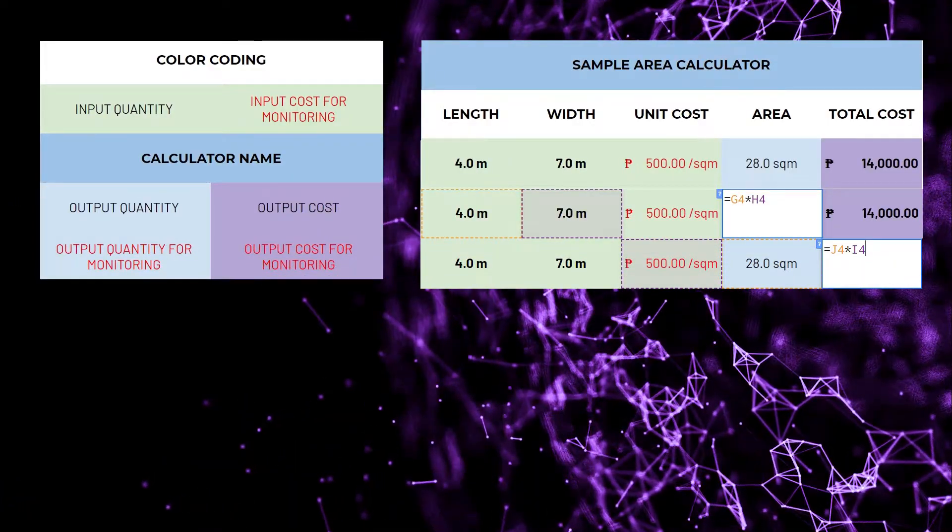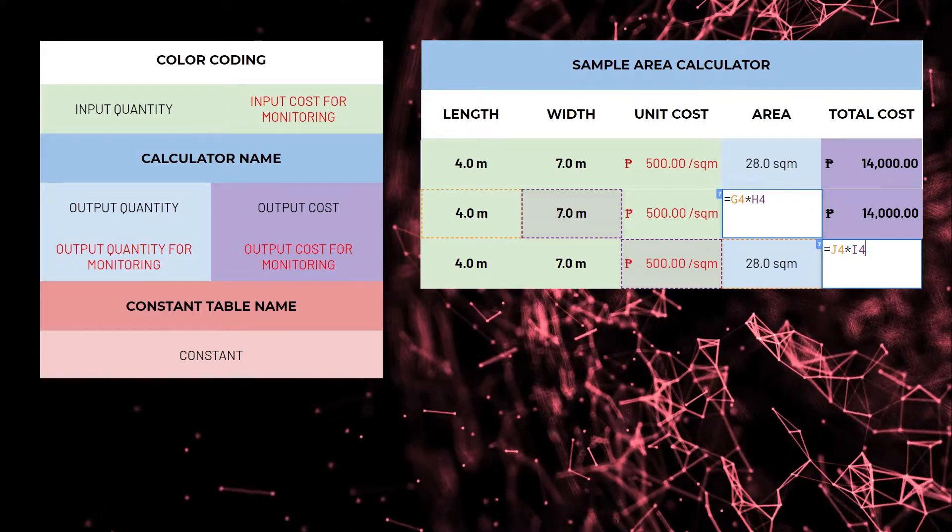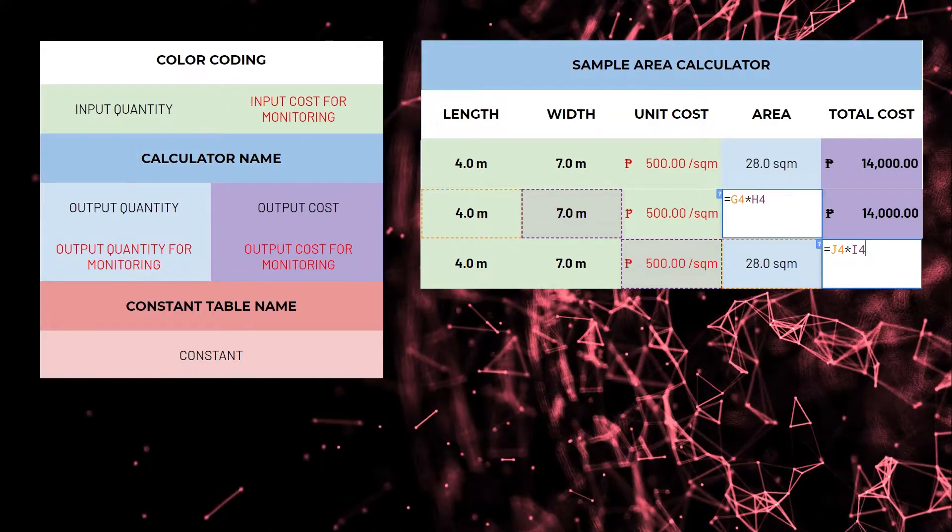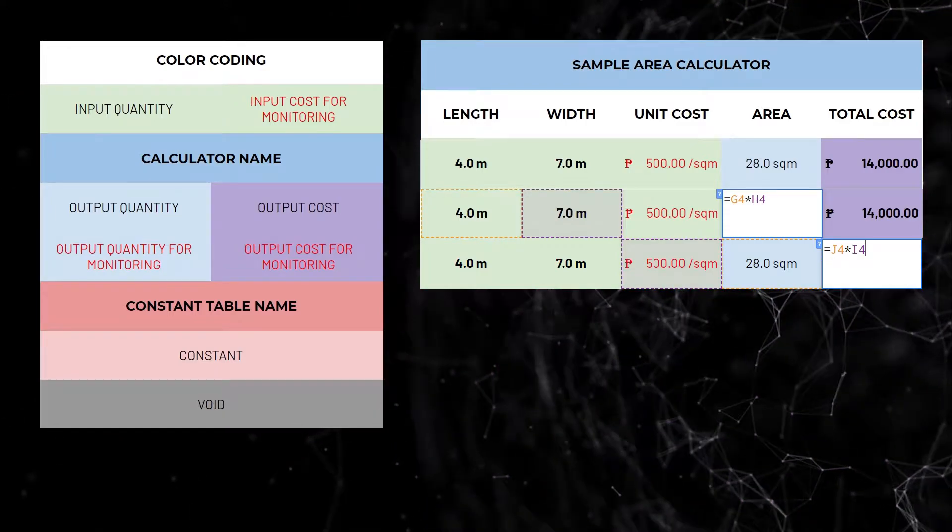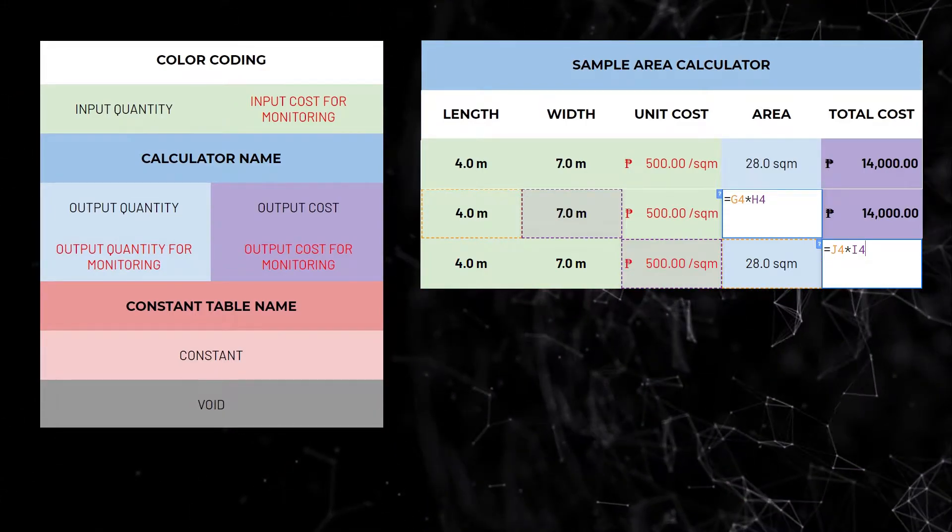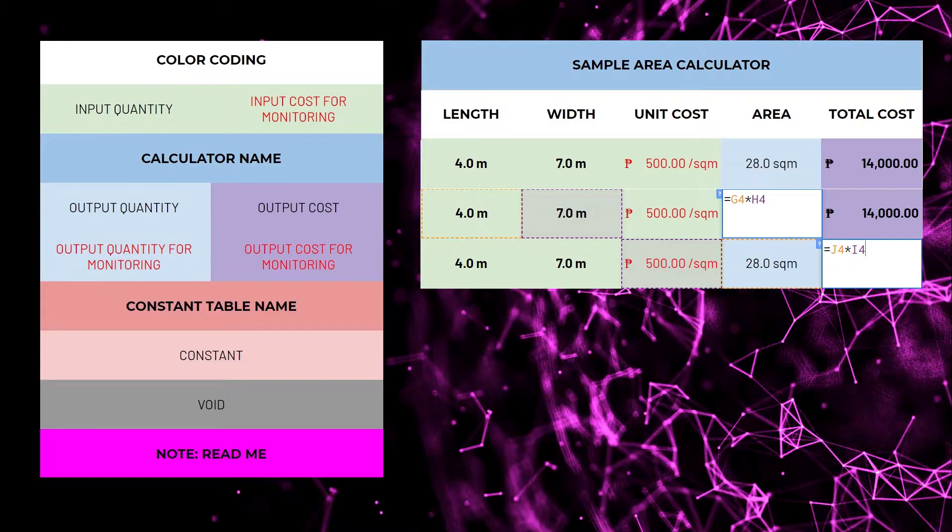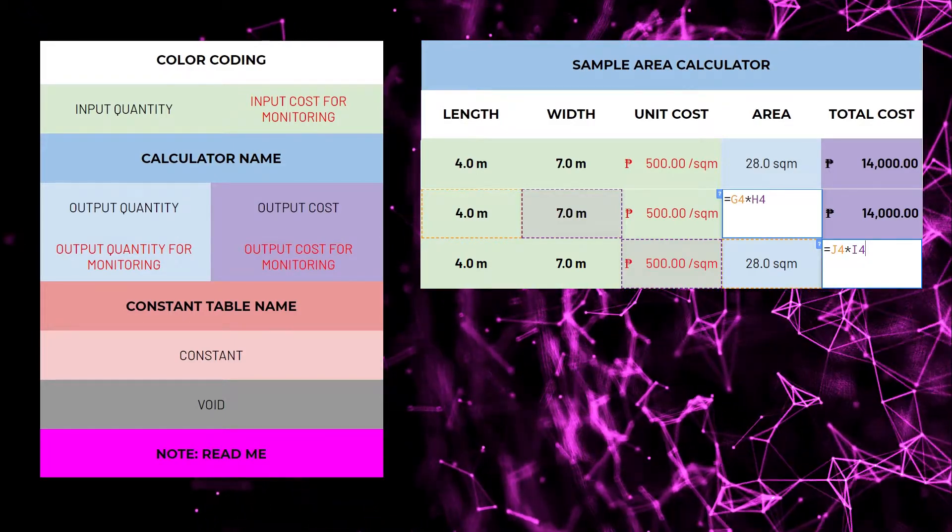Purple is for cost. Red are constants. It acts as an input cell for values that rarely change. Gray ones are voids. You don't put anything there. Magenta are for notes. I like how it just calls for attention.